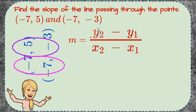So we're going to do five, replace y2 at five, y1 is negative three, x2 is going to be negative seven, and so is x1 negative seven.